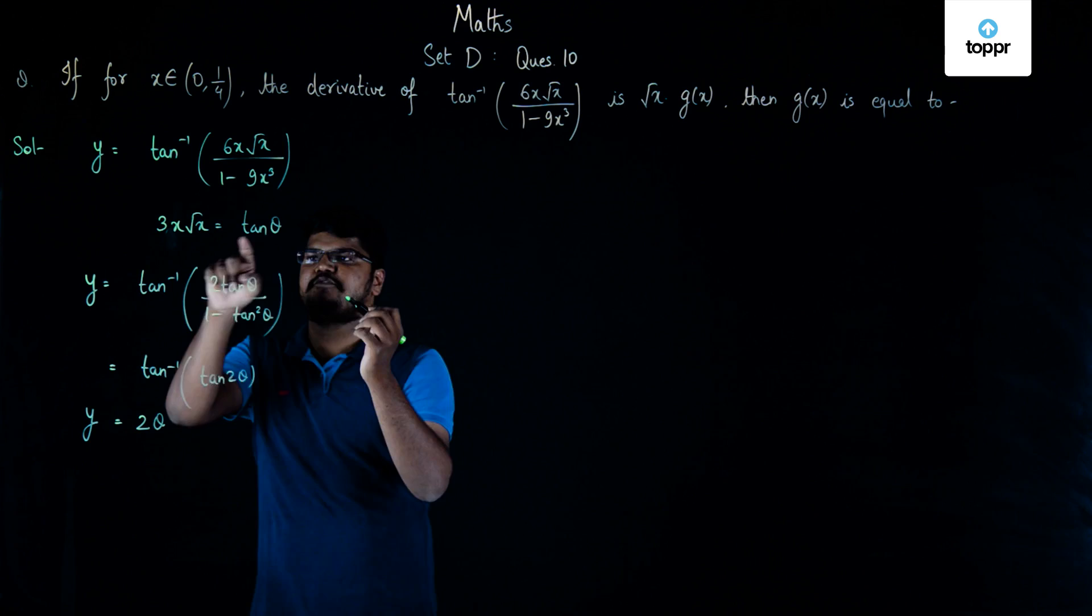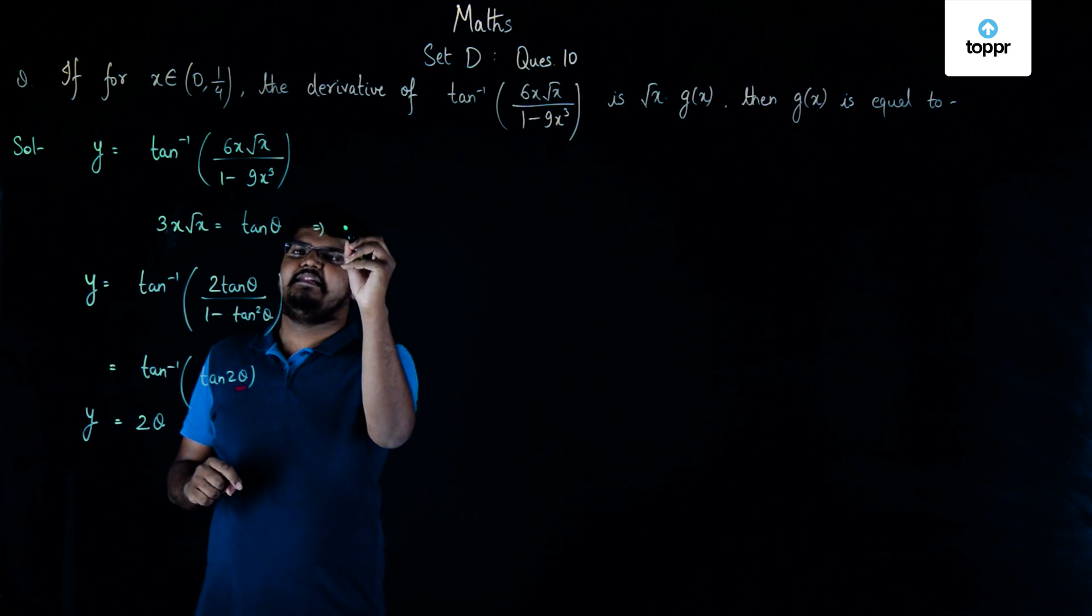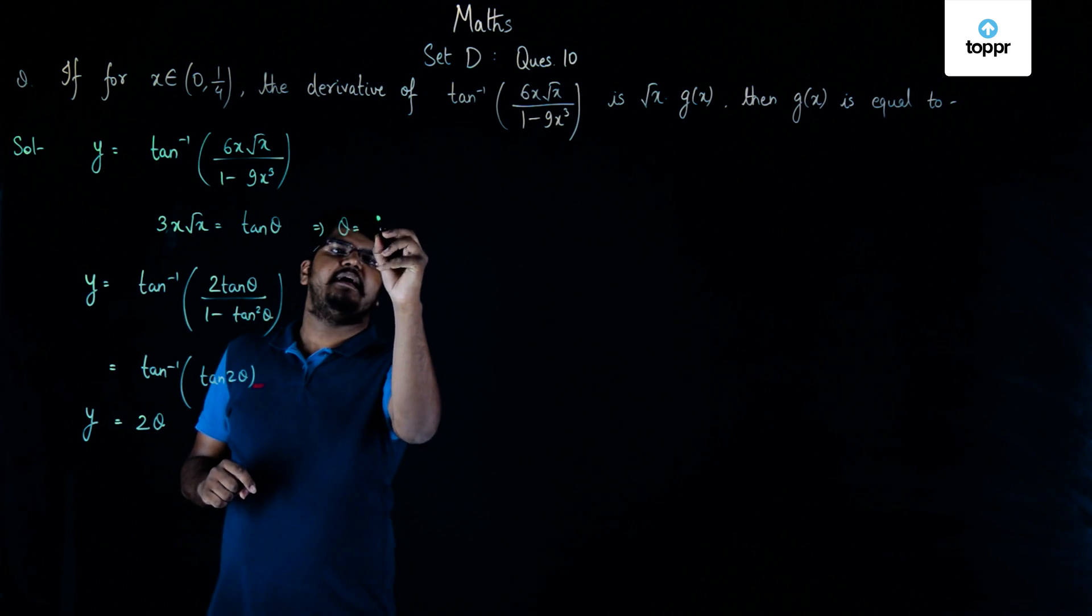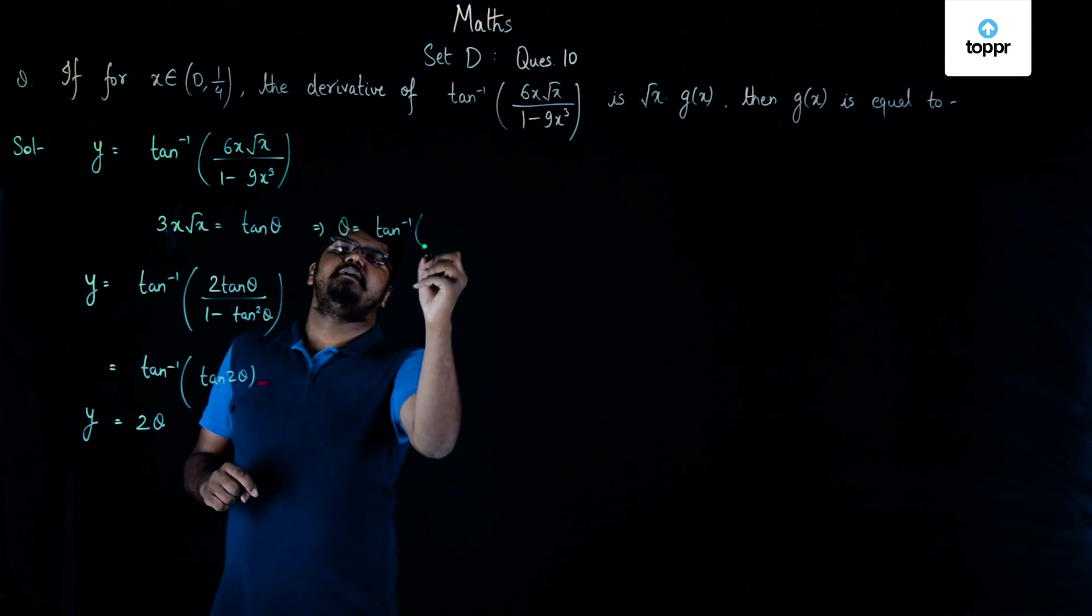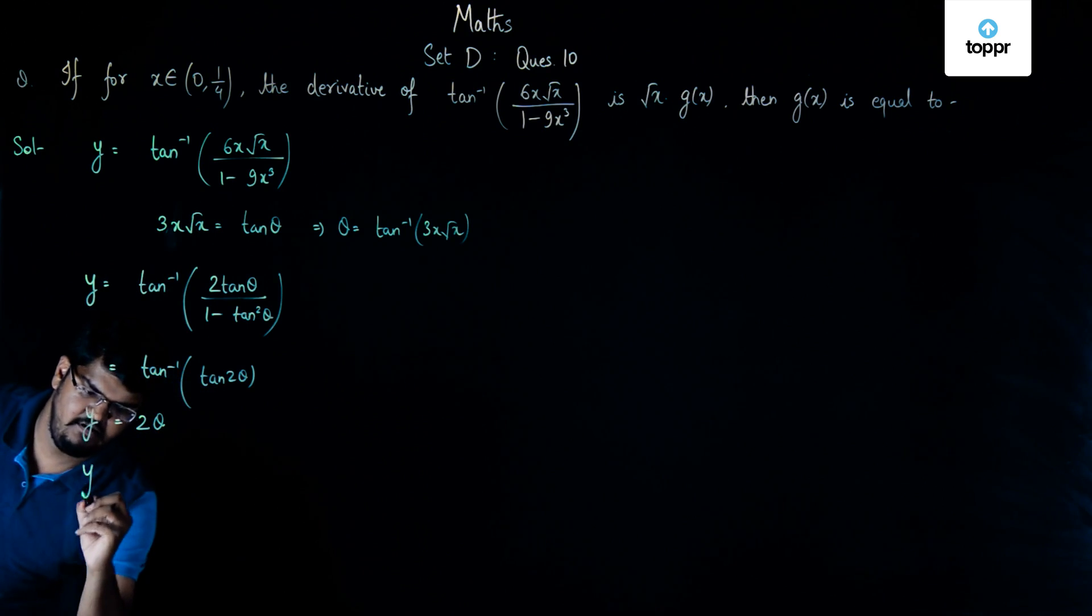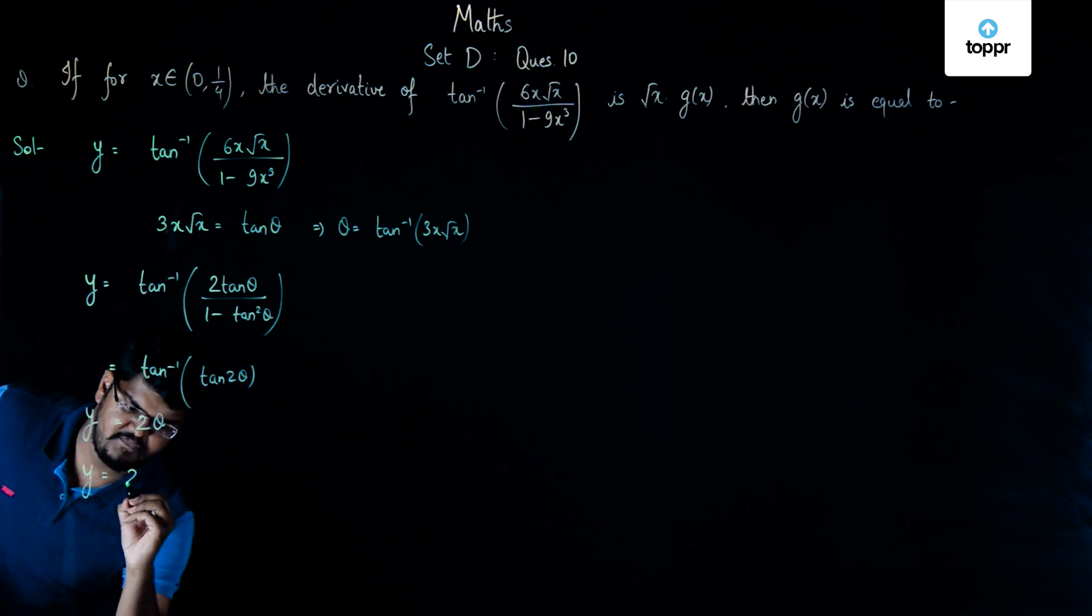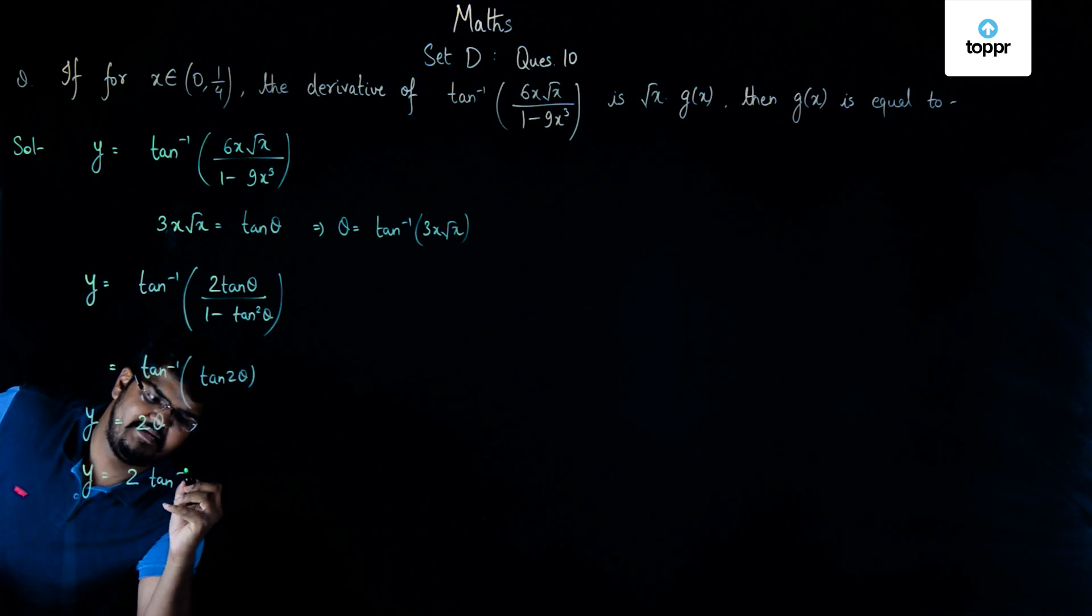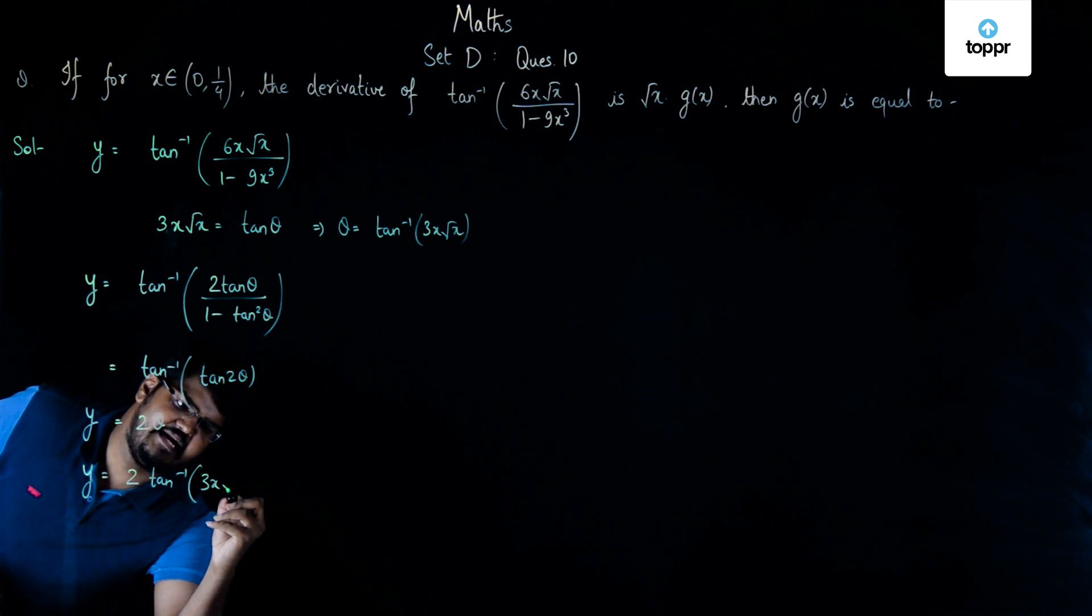If 3x√x equals tan θ, then θ equals tan inverse (3x√x). And if we substitute this value here, we can say that y is now equal to 2 times tan inverse (3x√x).